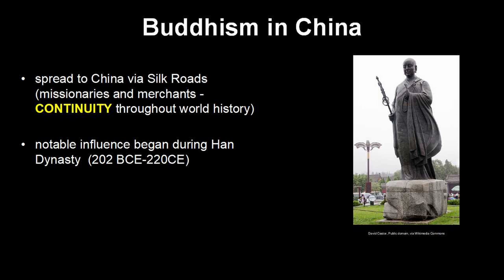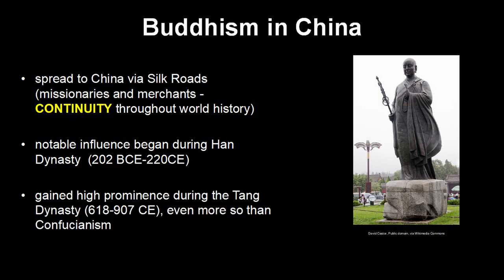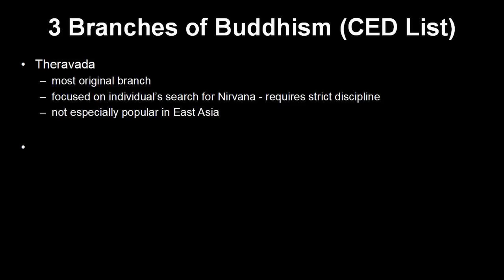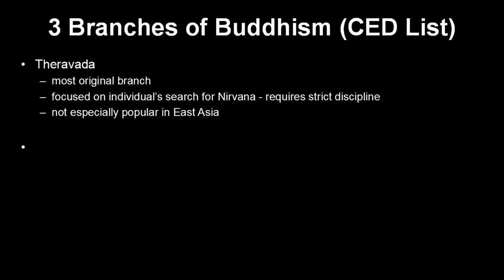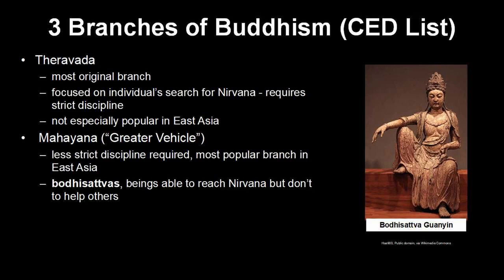This spread of Buddhism had already been happening as far back as the Han dynasty, and really ramped up during the Tang dynasty, in which Buddhism actually became more influential than Confucianism in many ways. There are a few branches of Buddhism the College Board wants you to know. Theravada is the most old-school, original form of Buddhism that focuses on the individual's process of overcoming desire and reaching nirvana. It wasn't especially popular in East Asia during our time period, but it did remain popular in Southeast Asia.